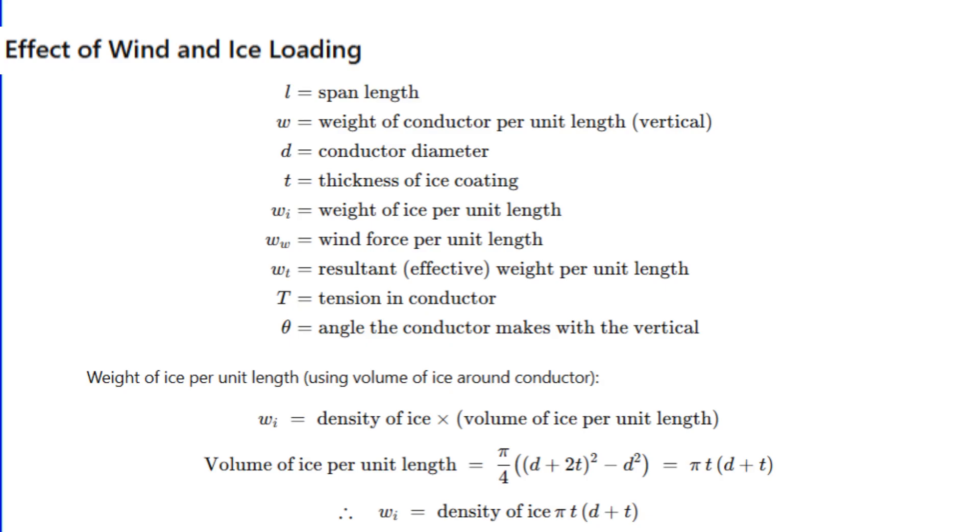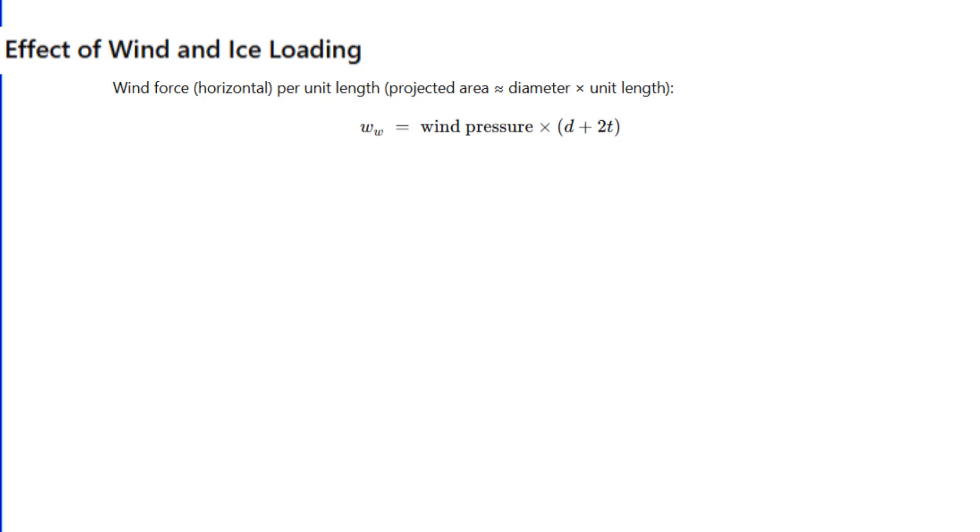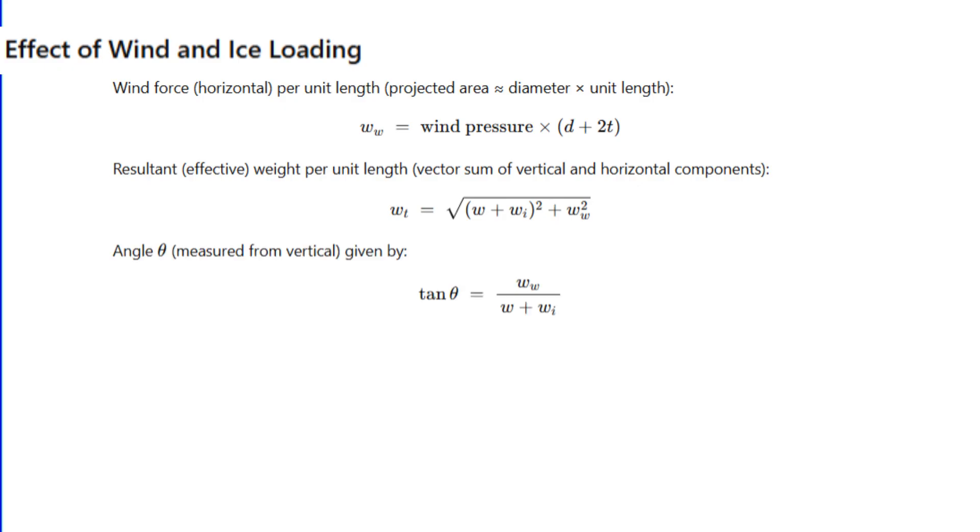The wind force per meter is ww, which equals wind pressure multiplied by (d + 2t). So the effective weight per unit length is wₜ = √[(w + wᵢ)² + ww²]. The conductor now hangs making an angle θ with vertical, where tan θ = ww/(w + wᵢ). The slant sag equals wₜl²/8T and the vertical sag equals s·cos θ.